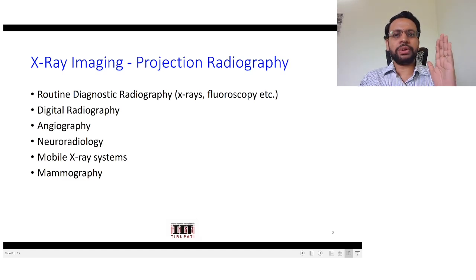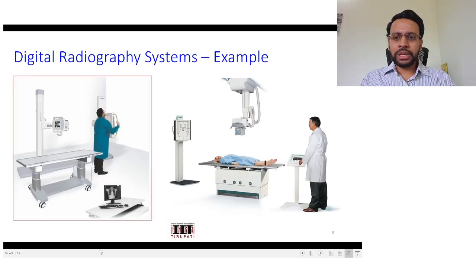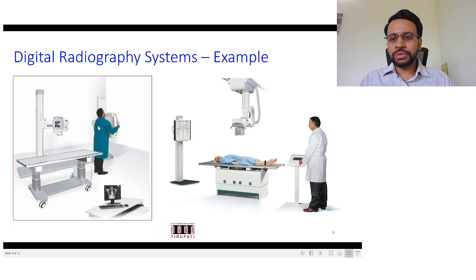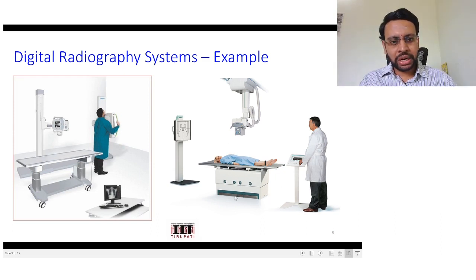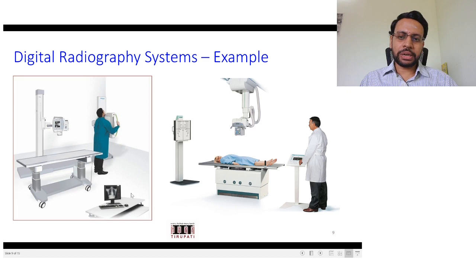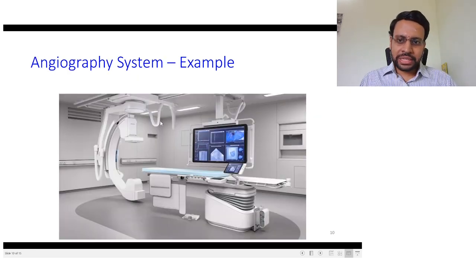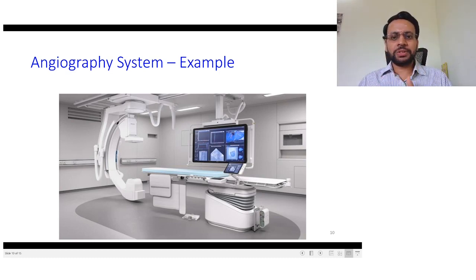These are different variations of X-ray imaging, particularly projection radiography, where the output is a 2D image. The first setup most people are familiar with is for chest X-rays: the X-ray source is on one side, the patient stands in a posterior-to-anterior position, and the digital detector or X-ray sensitive plate is on the other side. Another setup has the patient lying on a table with the X-ray source above.